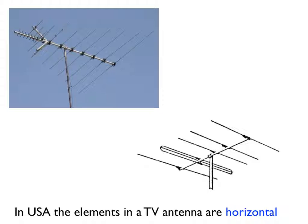Here are a couple of pictures of American outdoor television antennas. Notice that in North America the metal rods — called elements of a TV antenna — are positioned horizontally, that is to say they are parallel to the ground. Engineers would say that such an antenna is horizontally polarized.